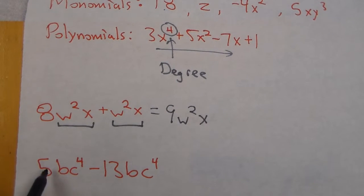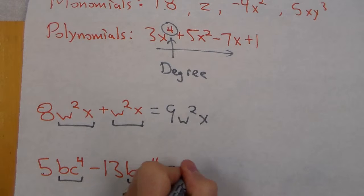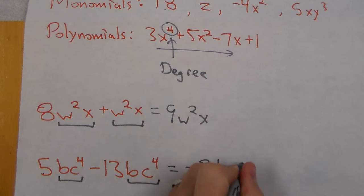We go and look at something like 5bc⁴ minus 13bc⁴. Again like terms, they both have a bc to the fourth, so it becomes 5 minus 13 which is negative 8bc⁴.